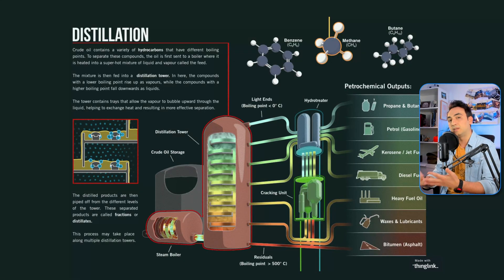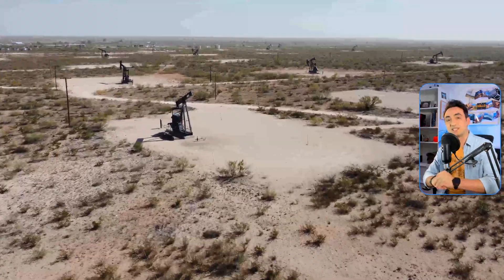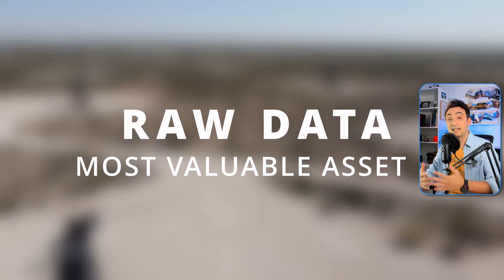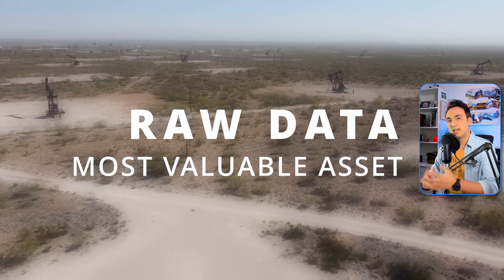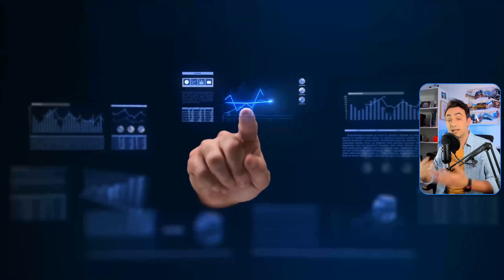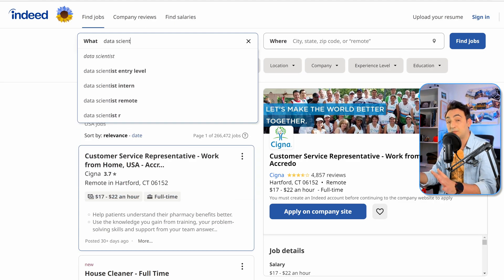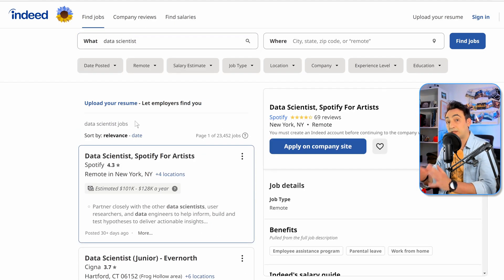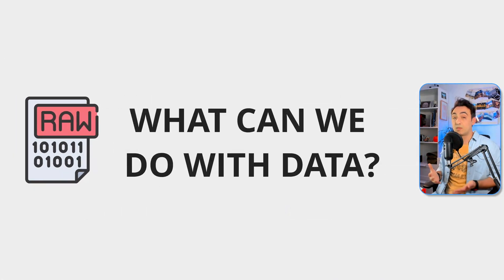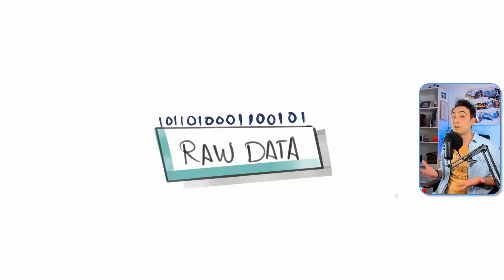It means we have to extract raw data like we extract oil — we have to refine it, process it, and transform it into something useful that has value for the business. Most companies are sitting on very large fields of this new oil — raw data — and most have understood that data is their most valuable asset. They have to extract it and analyze it to reveal insights that help them make faster and better decisions. That's why most companies are hiring large teams of data workers, and the demand for data scientists is increasing rapidly while supply remains low.